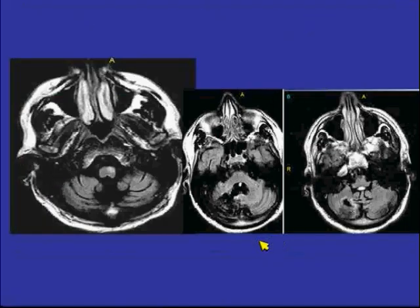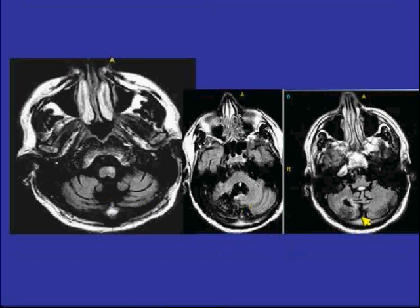The FLAIR scans are demonstrated here, from the level of the medulla, extending to the middle cerebellar peduncle, and then another shot down towards the dentate nucleus region. These are the axial FLAIR scans.